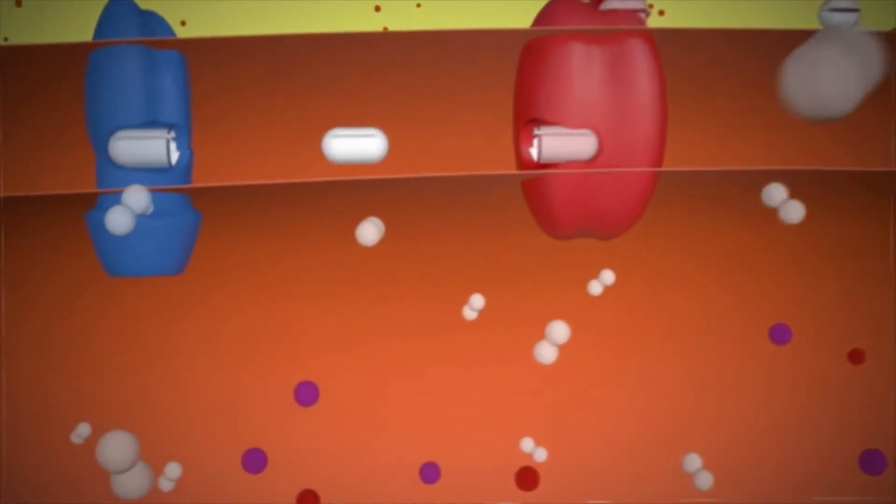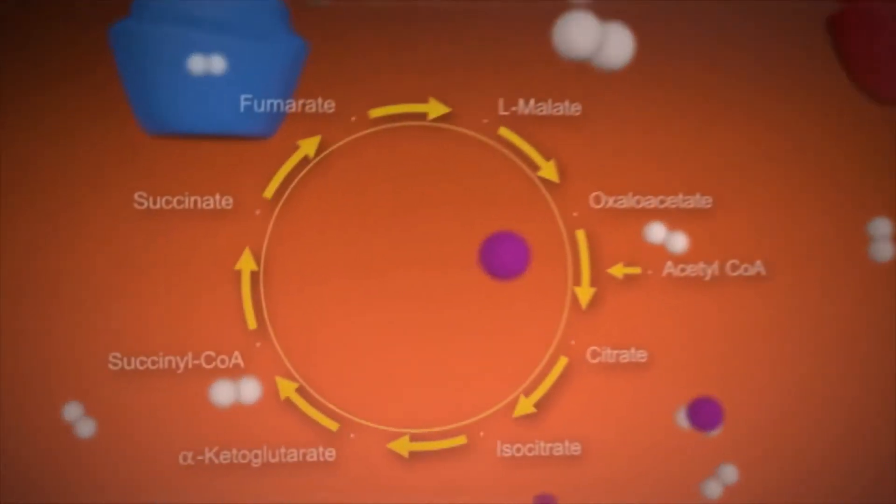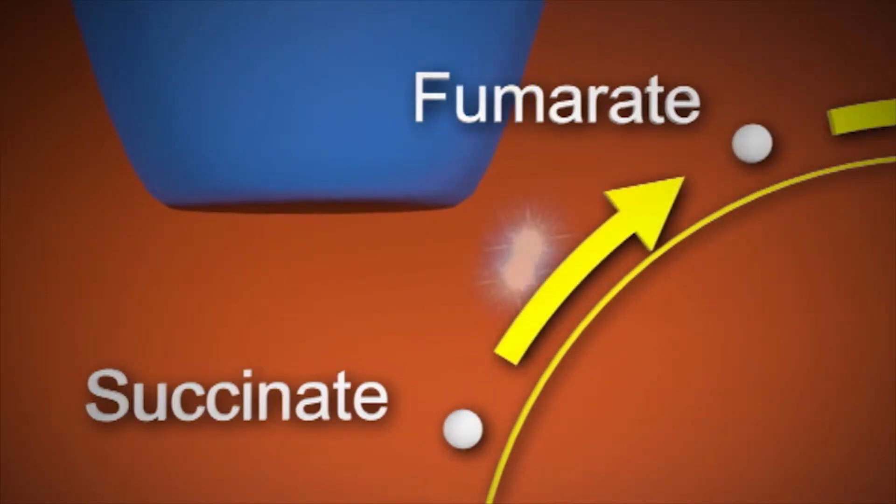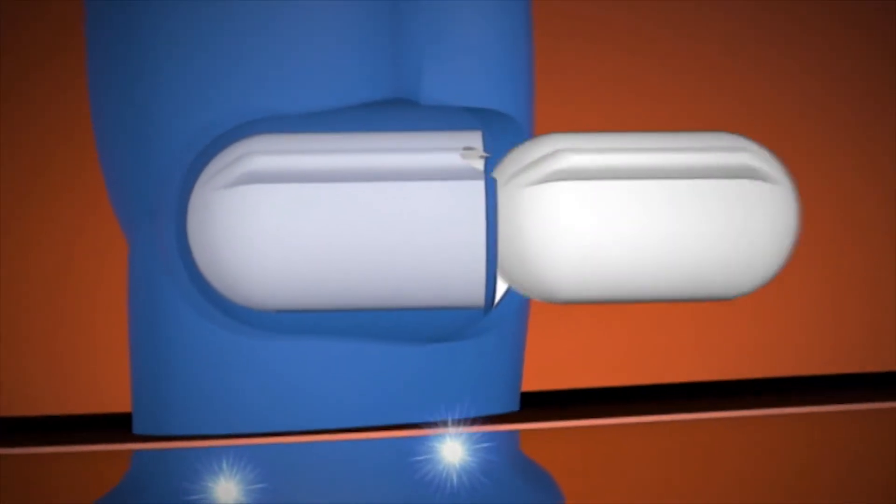In the mitochondrion, the energy production process starts in the matrix, a soup of enzymes operating in the citric acid cycle. At the point when succinate is converted into fumarate, two high-energy electrons are released and transmitted to the respiratory chain.